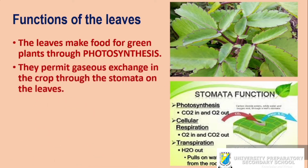The leaves also permit gaseous exchange in the crop through the stomata. In humans and other animals we have nostrils where carbon dioxide and oxygen are exchanged — humans breathe out CO2 and breathe in oxygen. But the reverse is the case in plants: plants absorb the CO2 and exhale oxygen out through their leaves via the stomata. So the leaves, where the stomata exist, are used for gaseous exchange in the crop.